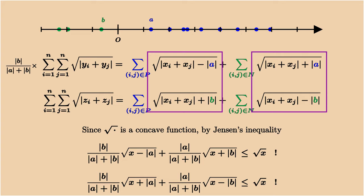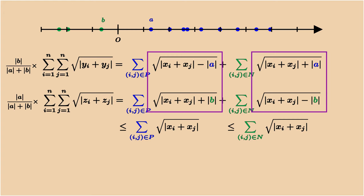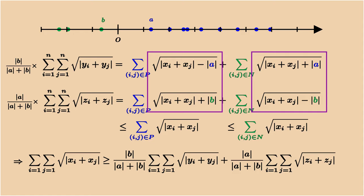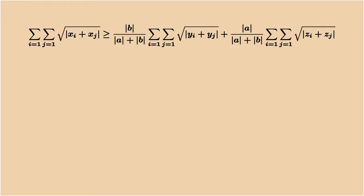Now we multiply the first row by b over a plus b and the second row by a over a plus b. Sum that up gives us xi plus xj is larger than the weighted sum of yi plus yj and zi plus zj.